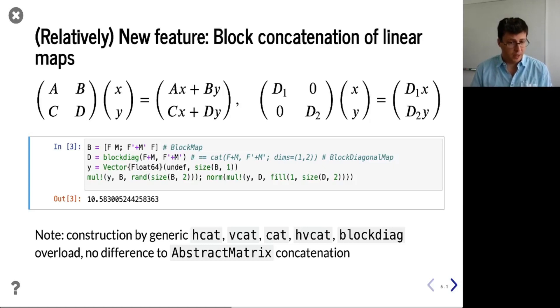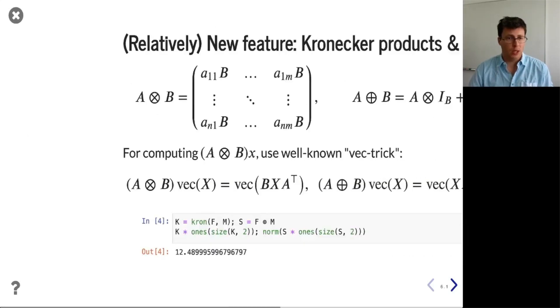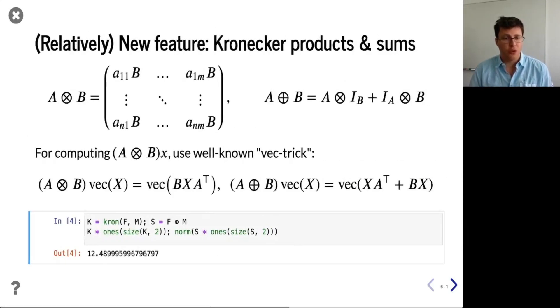So basically from the code perspective there is no difference at all whether F and M are matrices or linear maps. So another new, relatively new feature of LinearMaps.jl is Kronecker products and Kronecker sums. So to quickly recall what the Kronecker product is, there's this formula that seems to suggest that to form A Kronecker B, you do need a matrix representation of the linear map A.